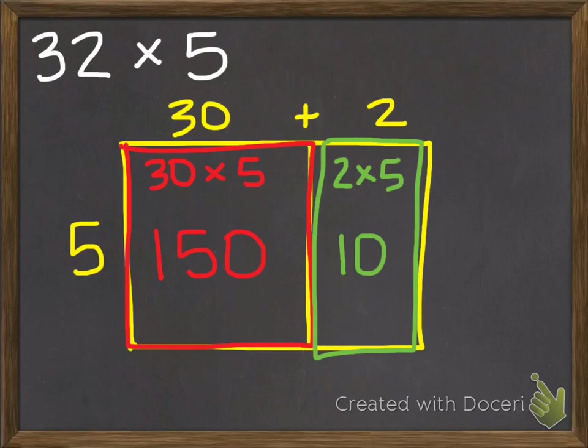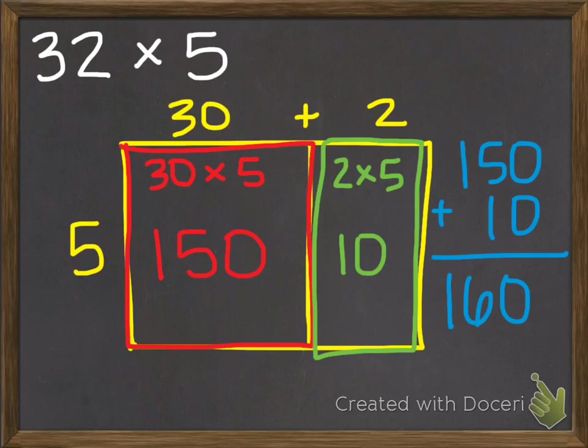Now my last step is just to add the partial products together. 150 plus 10. And I know that is 160. So the answer, the product of 32 times 5 is 160.